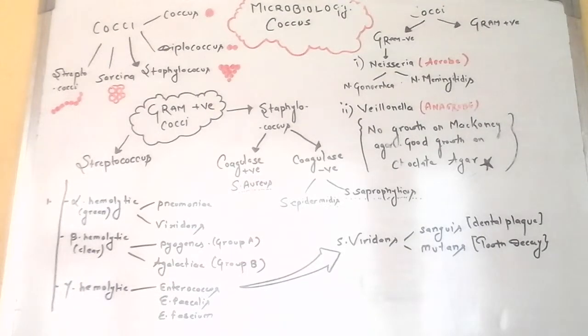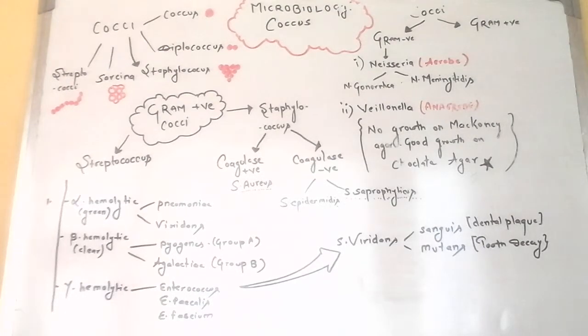Symptoms of late-onset group B strep infection can include fever, poor feeding, vomiting, and reduced consciousness.